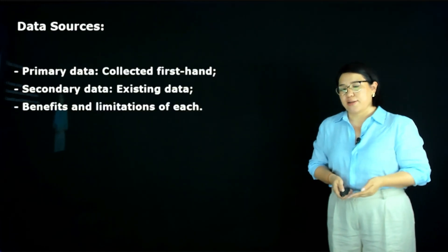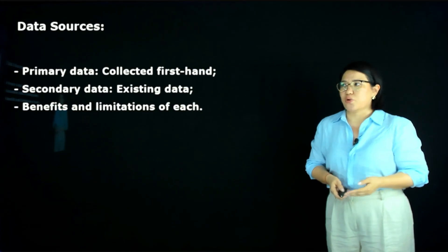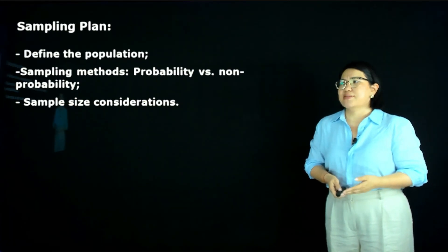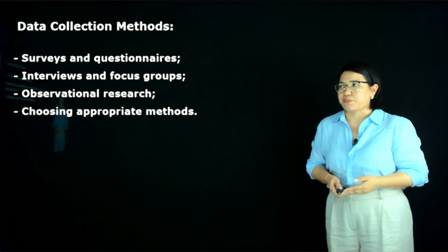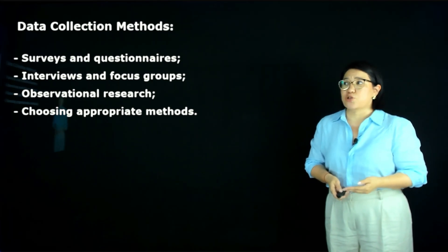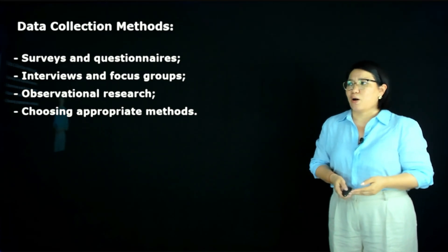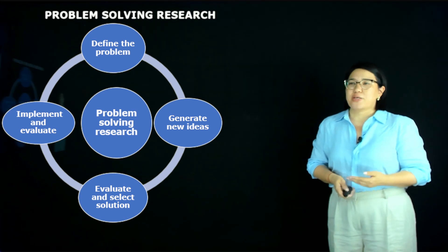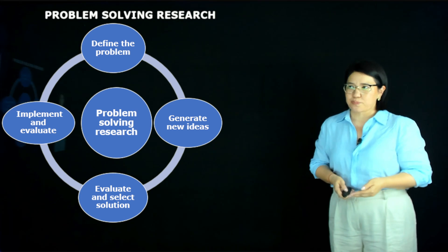Data sources include primary data and secondary data, each with their benefits and limitations. The sampling plan defines the population, sampling methods, and sample size considerations. Data collection methods include surveys and questionnaires, interviews, focus groups, observation research, and other approaches, with guidance on choosing the appropriate method for analysis.